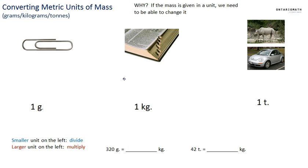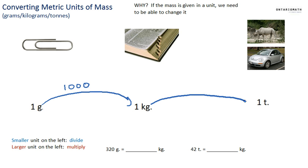So how do you convert grams to kilograms and kilograms to tons? The great part about metric units is that it's all base ten — tens, hundreds, thousands. You need to know that one kilogram equals one thousand grams, and one ton equals one thousand kilograms.